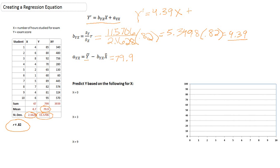79.9 minus byx, which we just calculated up here, to be 4.39. 4.39 multiplied by the mean of x. Looking at our table, we can see the mean of x is 4.7.